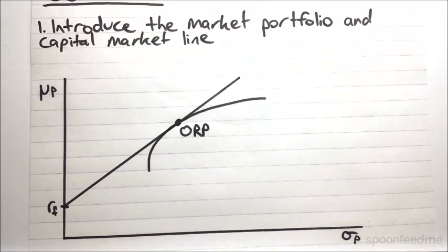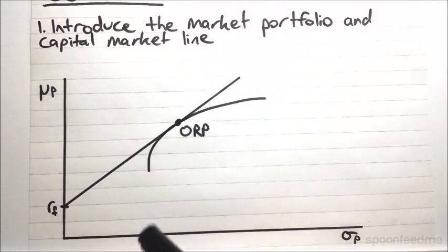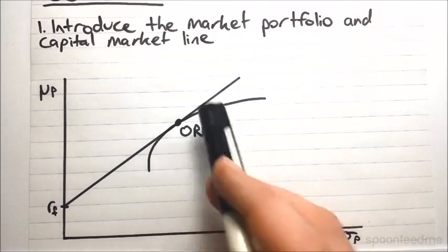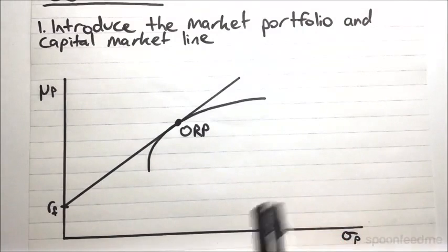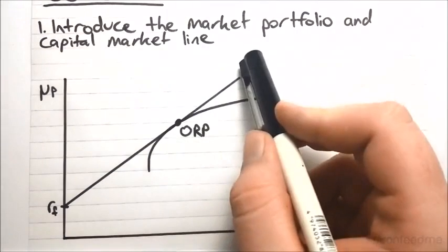Based on the assumptions outlined in the last video that are inherent to the capital asset pricing model, we can draw some conclusions regarding this line and this optimal risky portfolio. We know that all investors have the same expectations regarding risk, expected return, and covariances. So everybody is going to have the same numbers, do the same calculations, and have basically this same graph. And because everybody is making their decision based on mean-variance analysis, they are all going to conclude that it is only worthwhile to invest along this line.